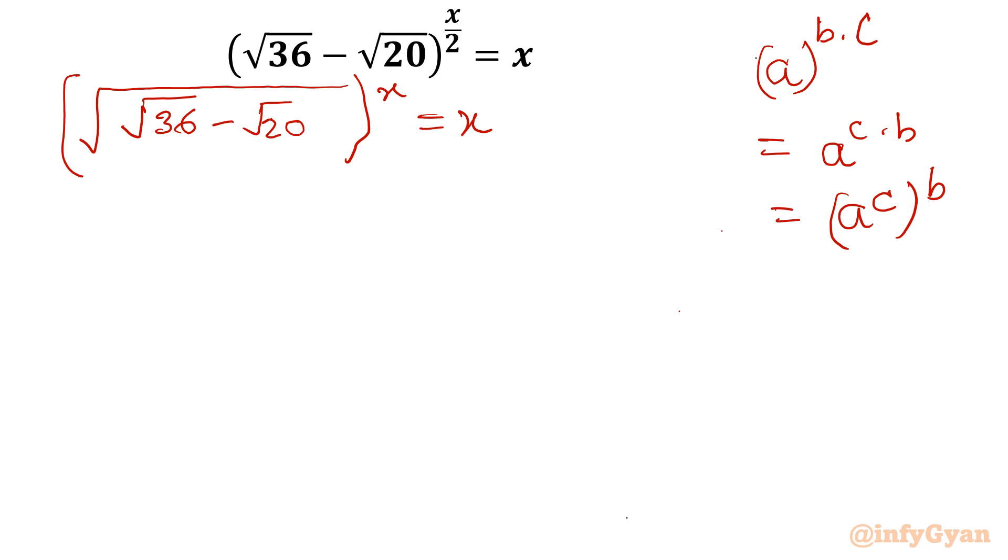Now I will resolve this left hand side. Square root 36 minus square root 20. How can it be resolved? Root 36 is 6. Root 20 is 4 times 5, which is 2 root 5.